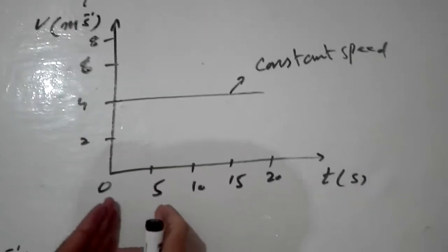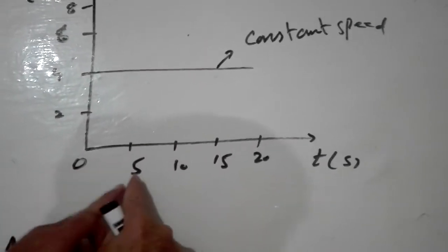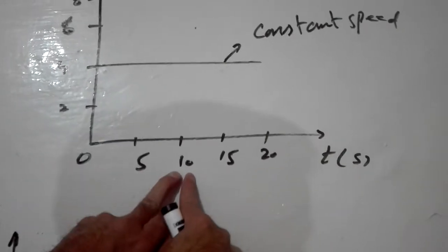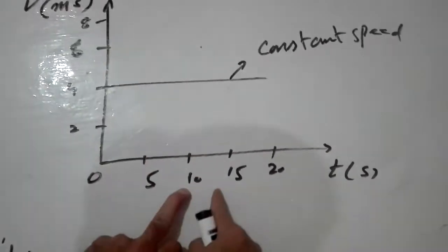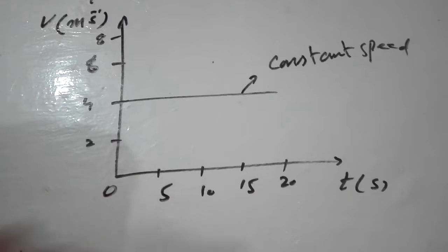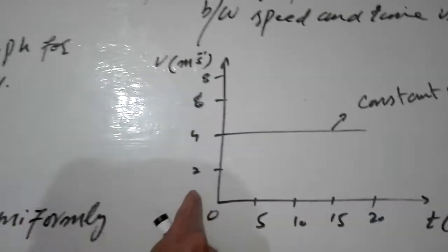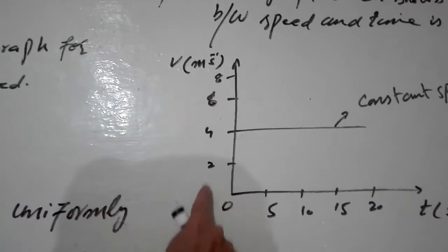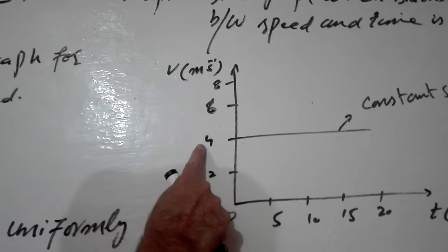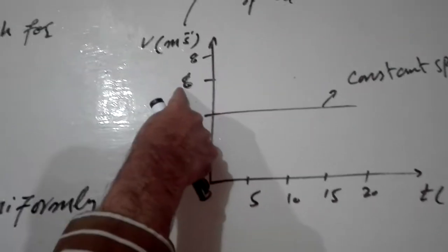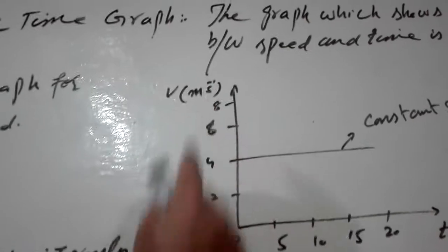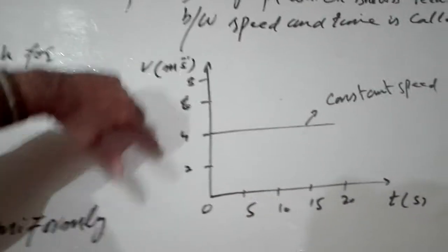You can take intervals on the time axis like 0, 5, 10, 15, and 20 seconds. Similarly, on the vertical speed axis, mark 2 m/s, 4 m/s, 6 m/s, 8 m/s, and so on.